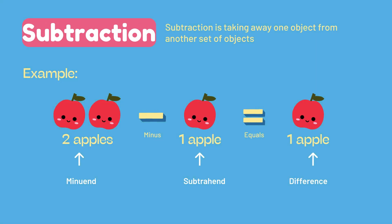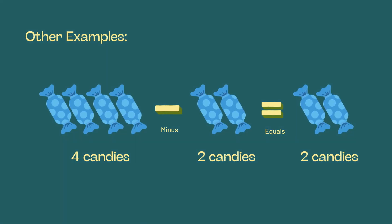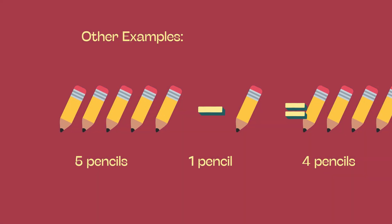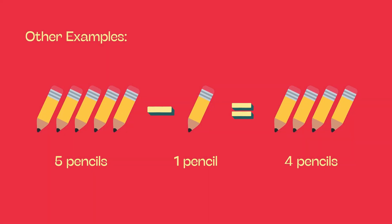Subtraction is taking away one object from another set of objects. Example: two apples minus one apple equals one apple. Other examples: four candies minus two candies equals two candies. Five pencils minus one pencil equals four pencils.